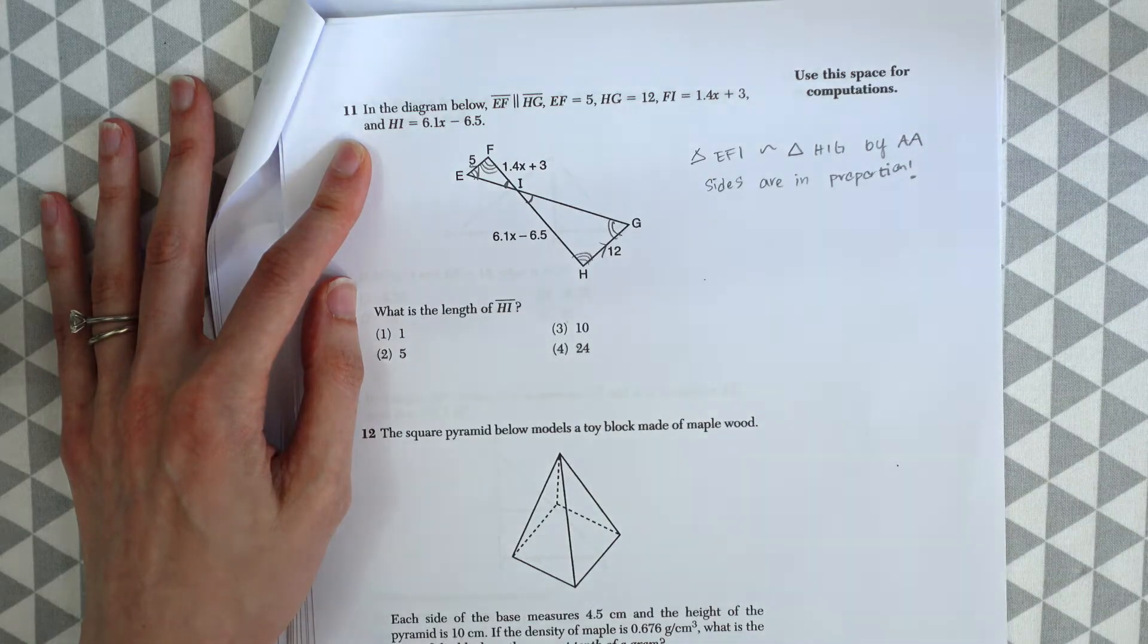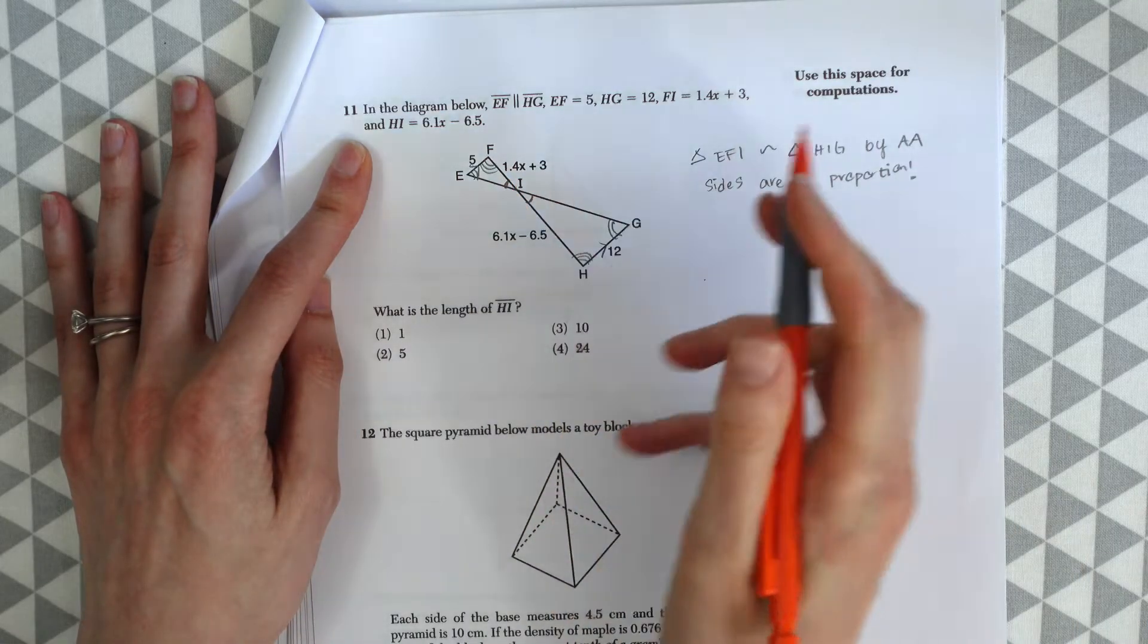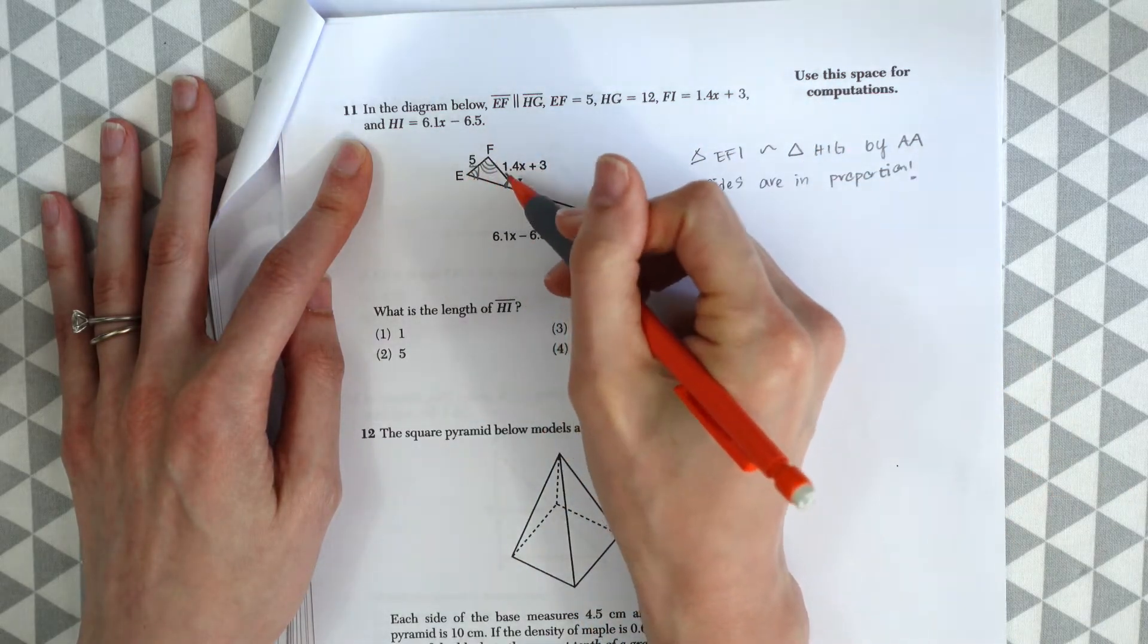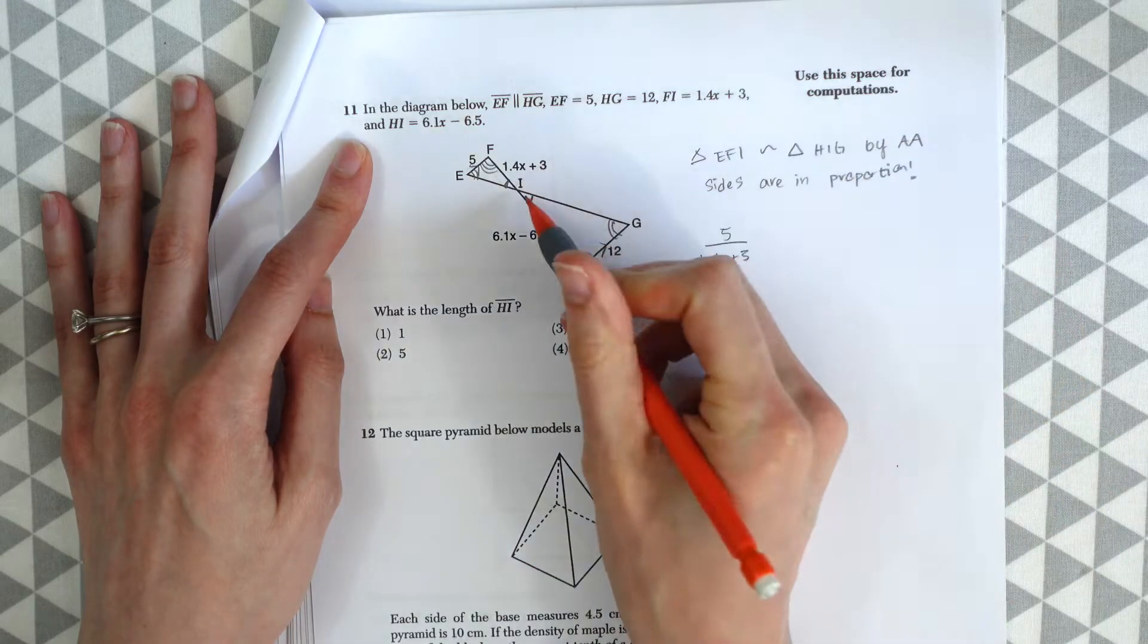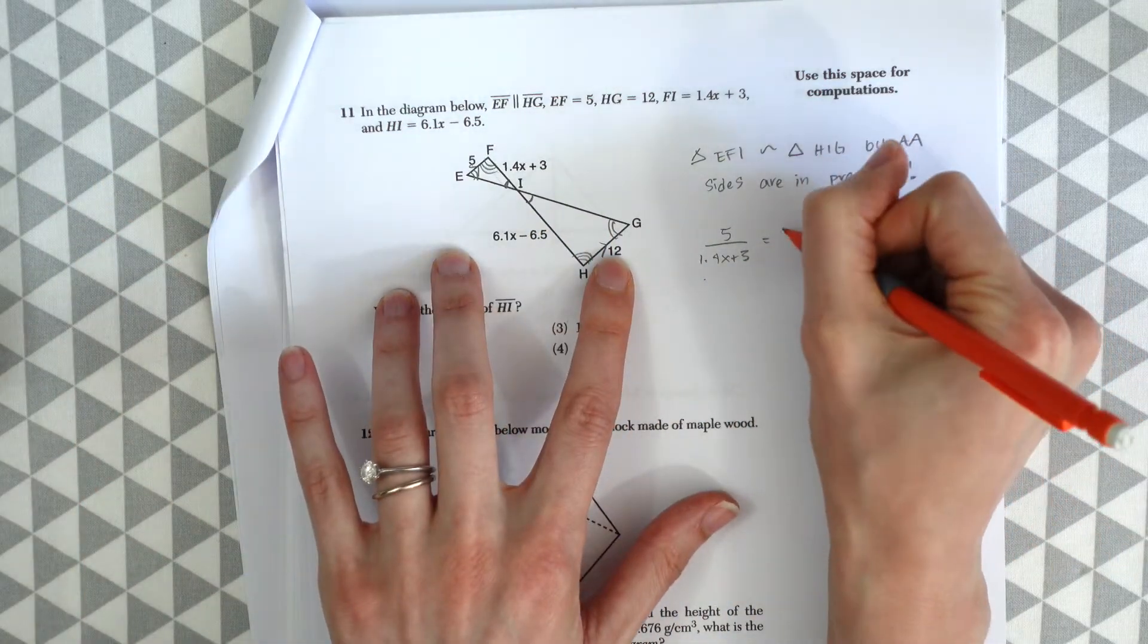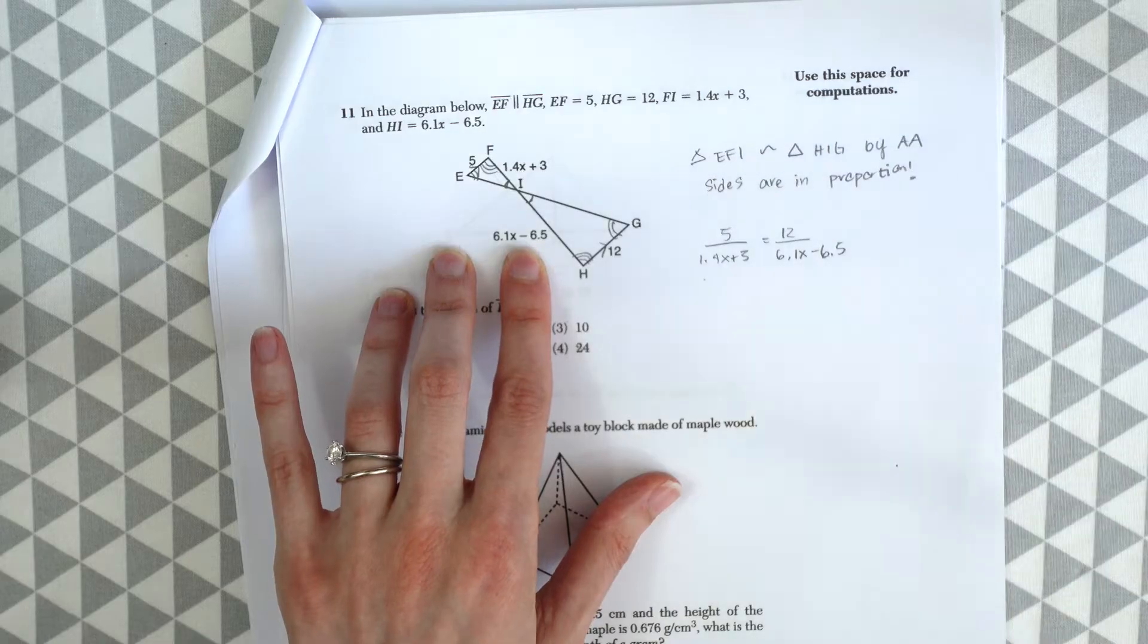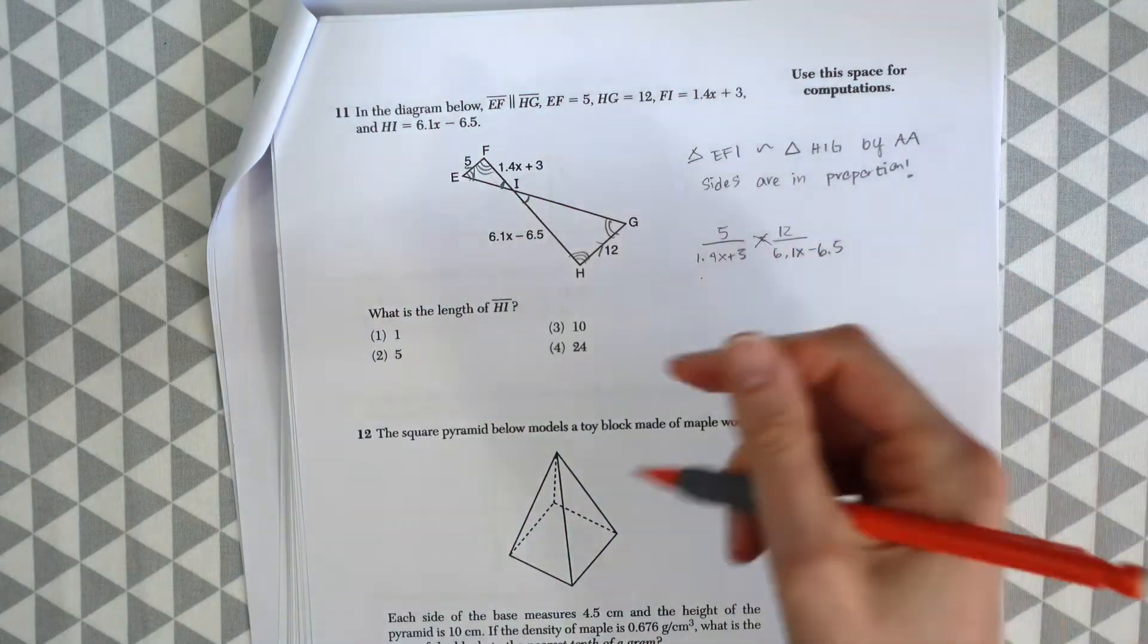And I have a whole video on similar triangles if you want to check that out. So now we can make a little proportion with the sides. We can have the base 5 over its side of this little triangle here, triangle EFI. So we have the base 5 and then over 1.4X plus 3. The other triangle HIG, we're going to set that equal to the base on this side, 12, all over its side, 6.1X minus 6.5. And now we could just solve for X using algebra cross-multiply.